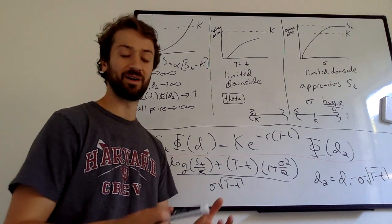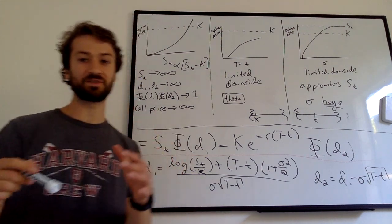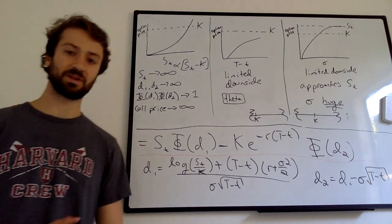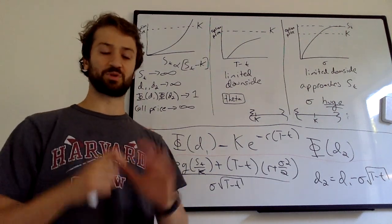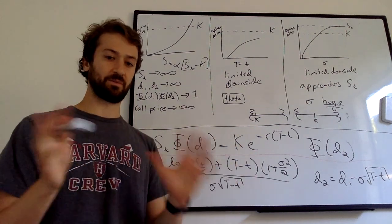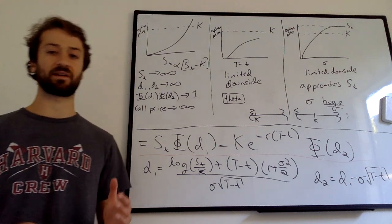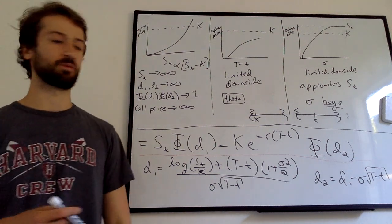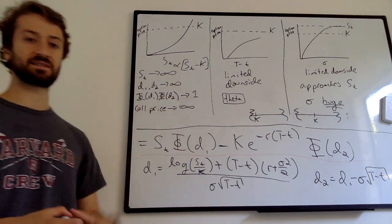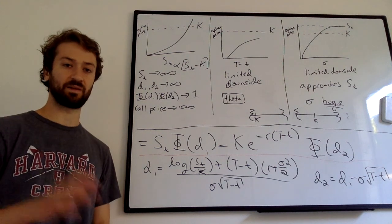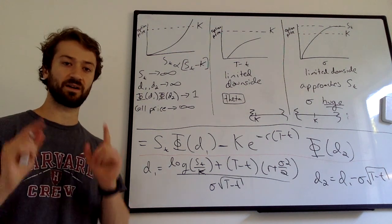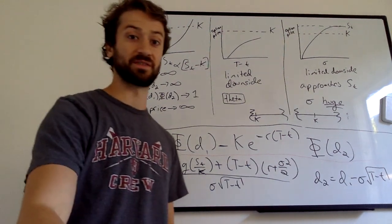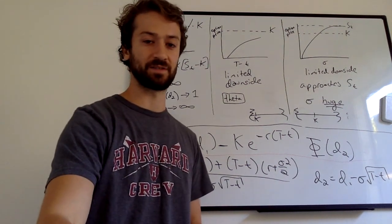All these graphs are in the book, which is linked below. Big thanks to Stephen Blythe's Introduction to Quantitative Finance for helping with a lot of these proofs and understanding. Hopefully you enjoyed this series — thanks for following along with our Black-Scholes derivation. See you next time.